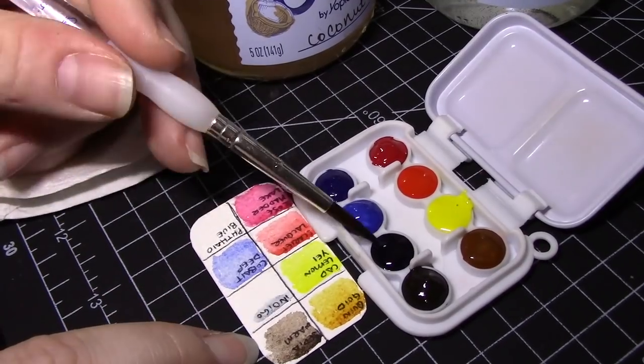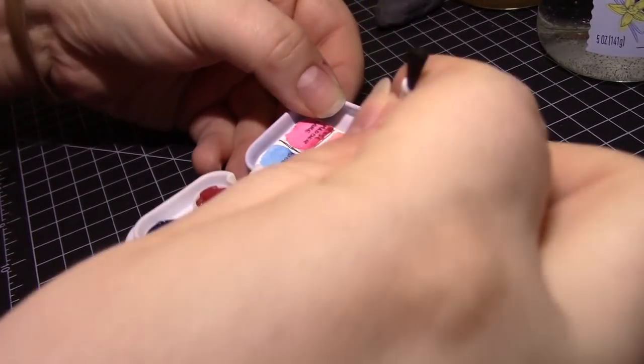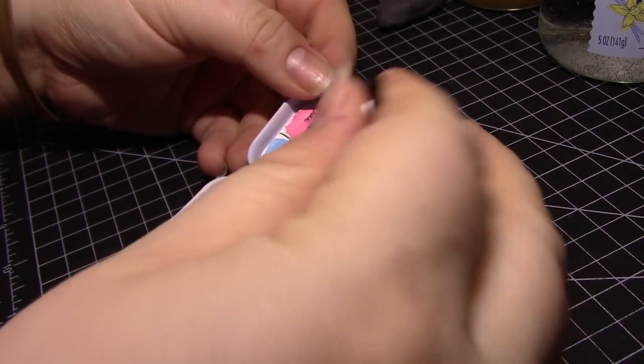Also, at some point I realized that the tiny little circle on the side of the palette that looks like it's where a keychain is supposed to connect is actually a little holder for the paintbrush. How cute!